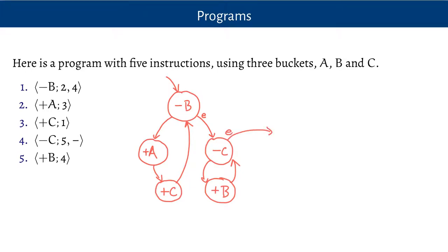This is another way to represent how the program works. Notice that in this diagram, none of these nodes have the numbers one, two, three, four, or five, because the way they're connected to each other is now just done by the arrows.